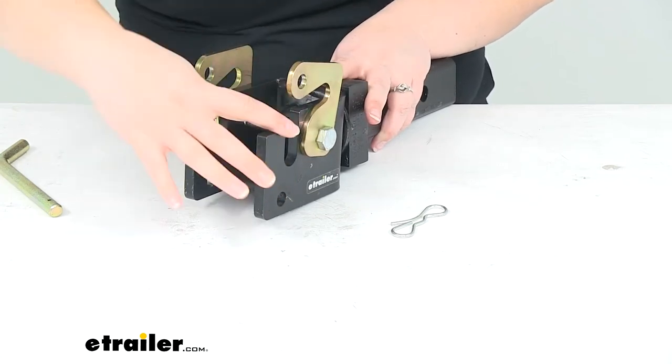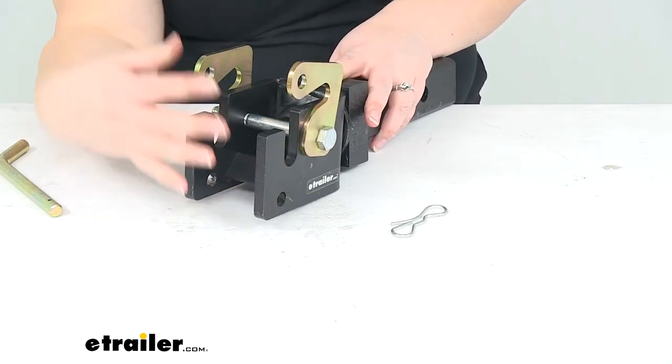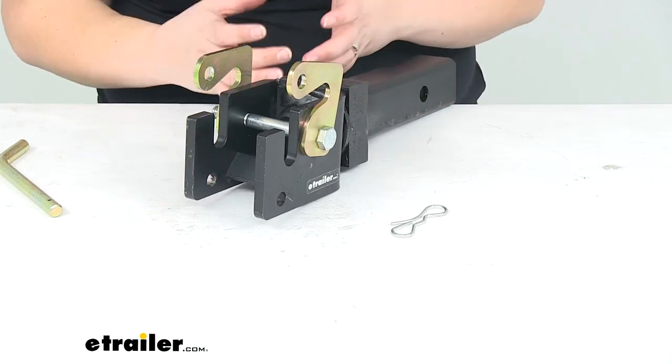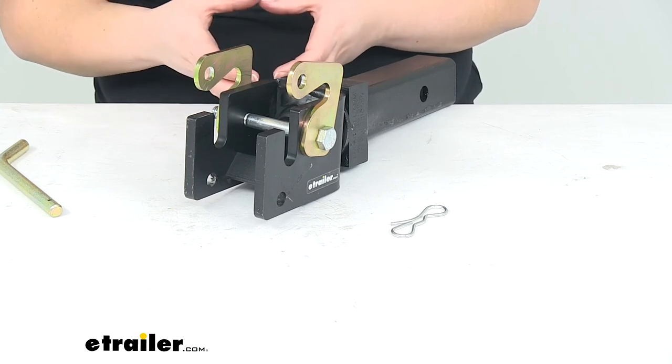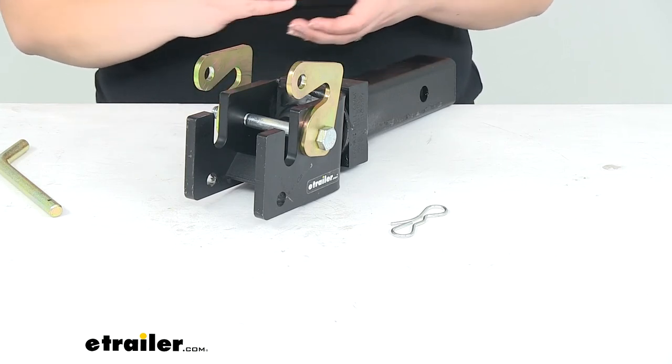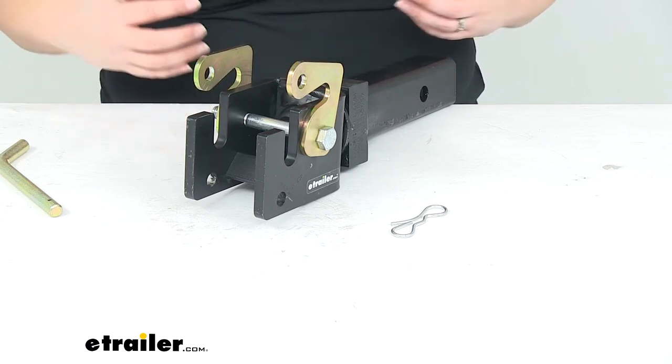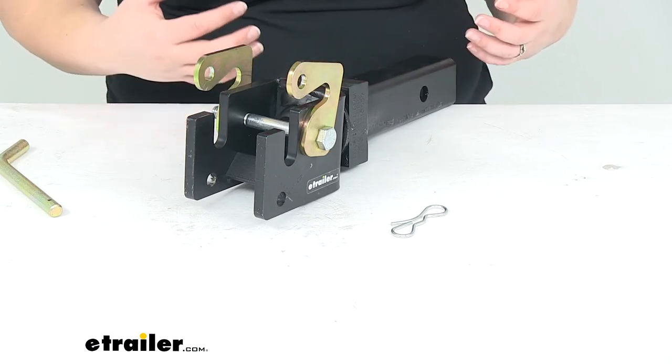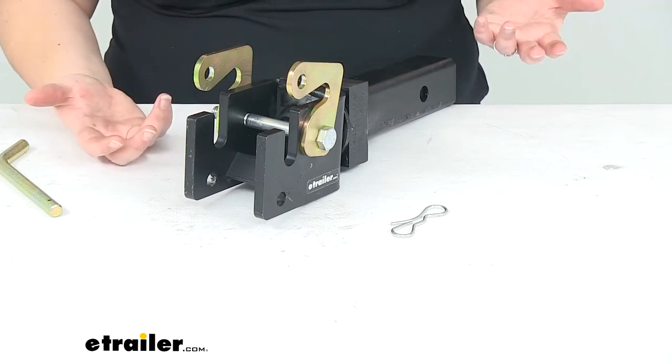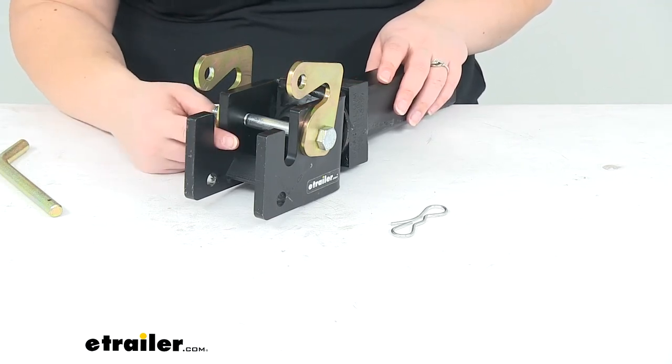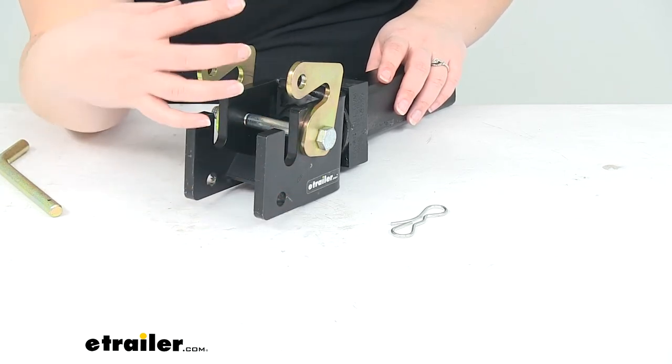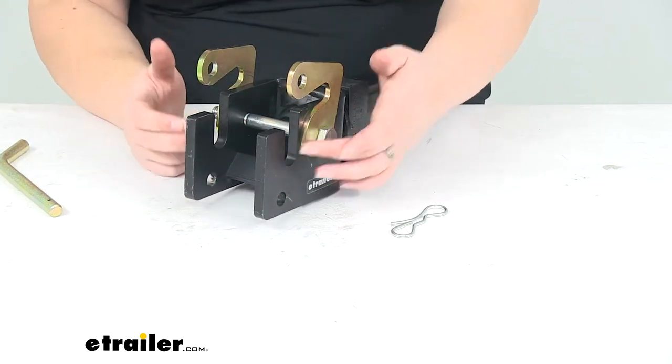Something that's similar that people use for off-road applications would be like a pintle ring or a pintle mount. A lot of times there's a good amount of play there, there's movement that can happen and you kind of get a chucking and jarring feeling from the trailer transferring into your truck and it's just not the most comfortable thing. So this is going to hold really tightly onto that piece and reduce that kind of movement front to back and side to side, so we shouldn't have to worry about that.